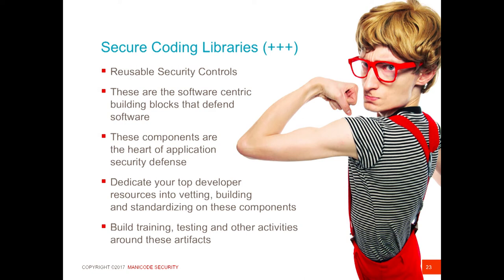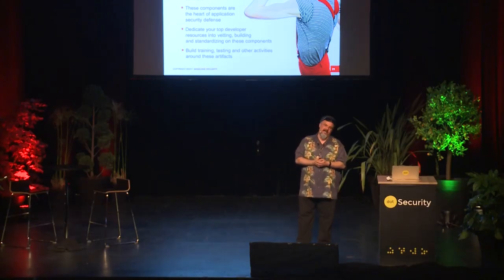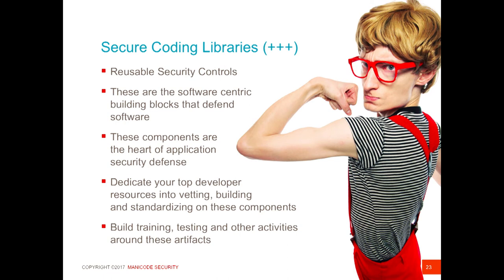Reusable security controls are the core building blocks to secure software. As an industry, we've put almost no focus on this — it's an afterthought, because you can't sell it in a pretty package. This is something that developers must build, maintain, and leverage through the software development lifecycle with security involved. If you're asking how to get started with application security, I think this is it: requirements that drive what security is, and then secure coding libraries, framework components, and other core components that your team can use to build secure software.